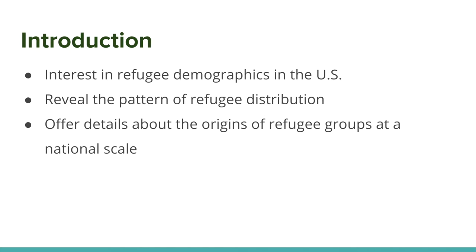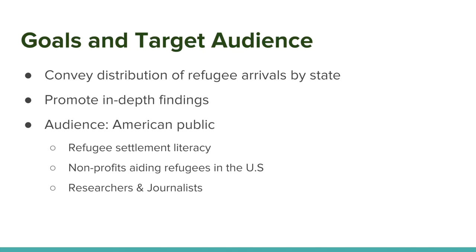Misconceptions about refugees in the United States are fairly common. This map was inspired by an interest in promoting literacy about refugee distributions in the United States using data from the Office of Refugee Resettlement from 2015. The interest was to educate users about refugee populations in the United States, specifically showing patterns of refugee distribution within specific states and the origins of refugee groups at the national scale. The intent of this map was to access as broad an audience as possible while also acting as a helpful tool for specialists in non-profits, researchers, and journalists.